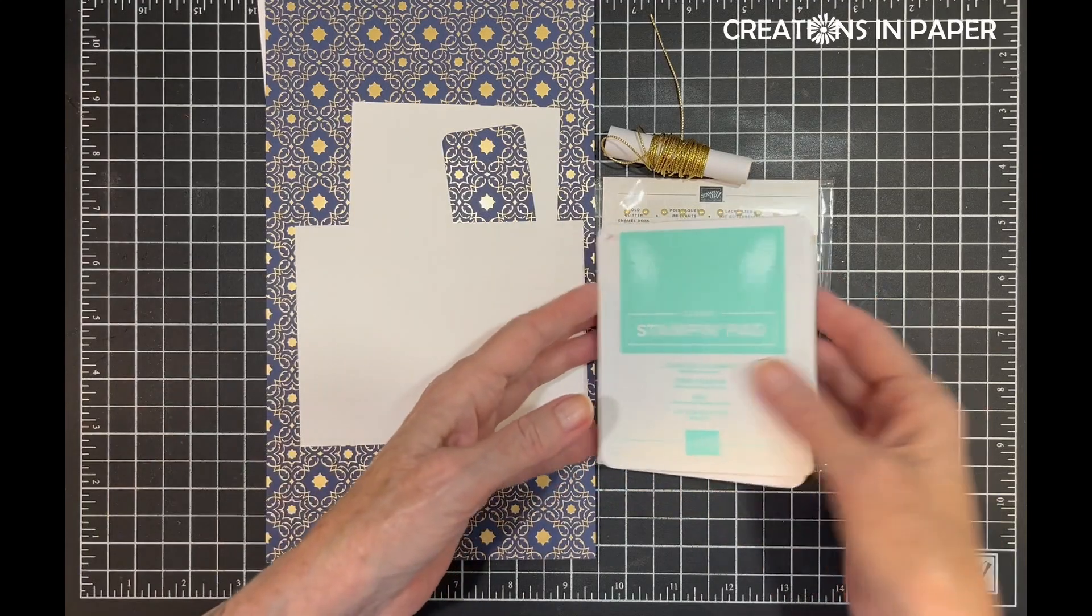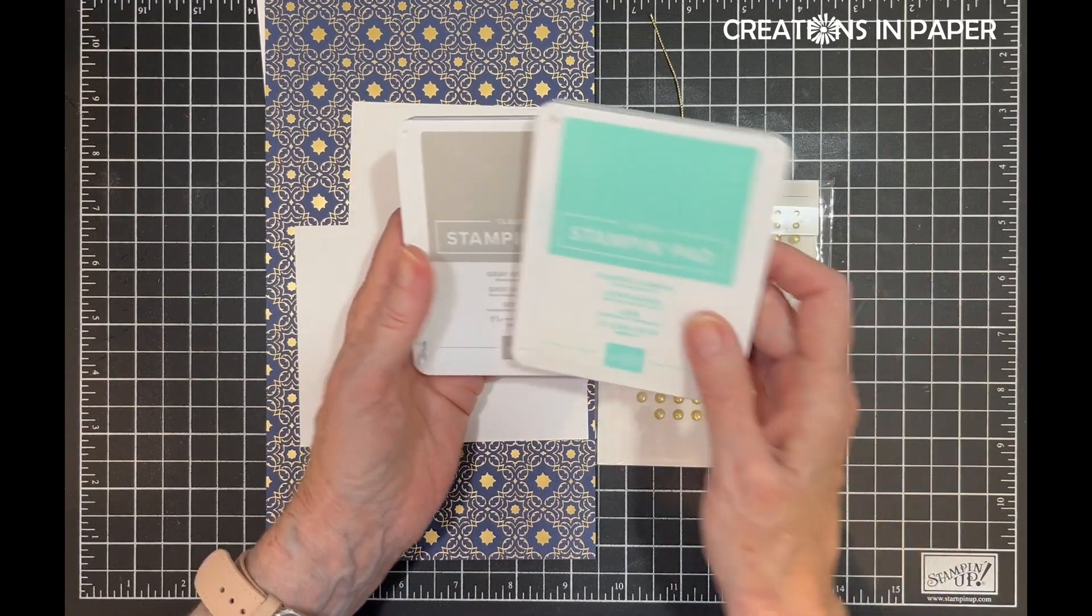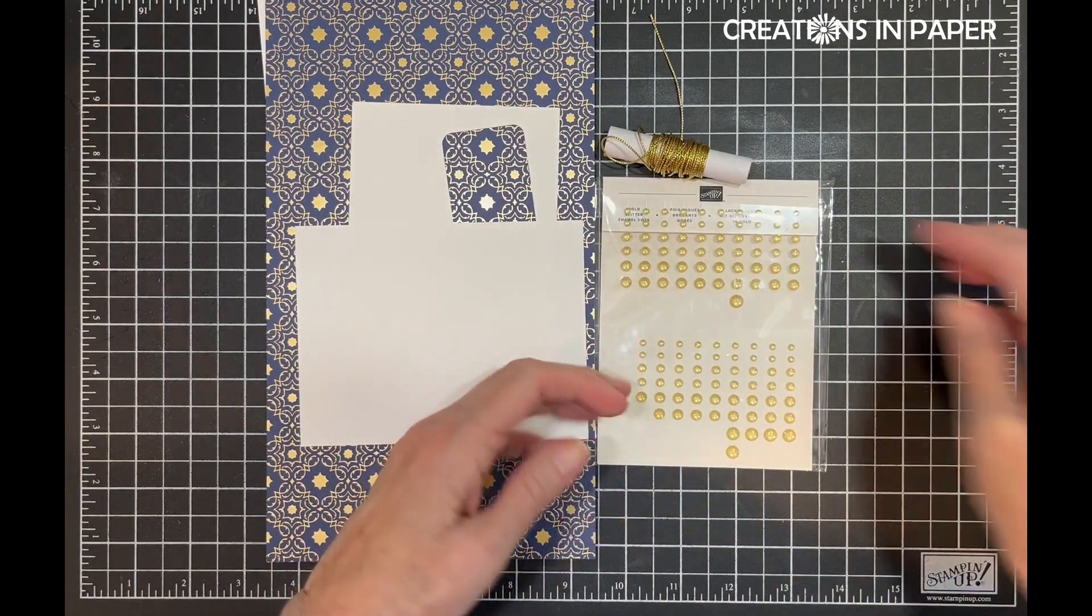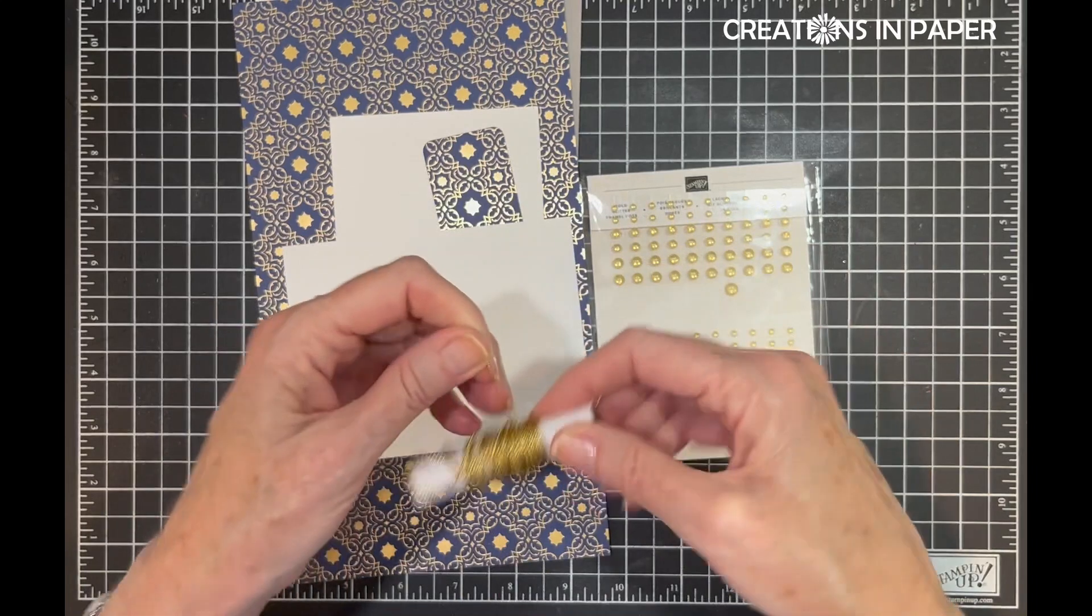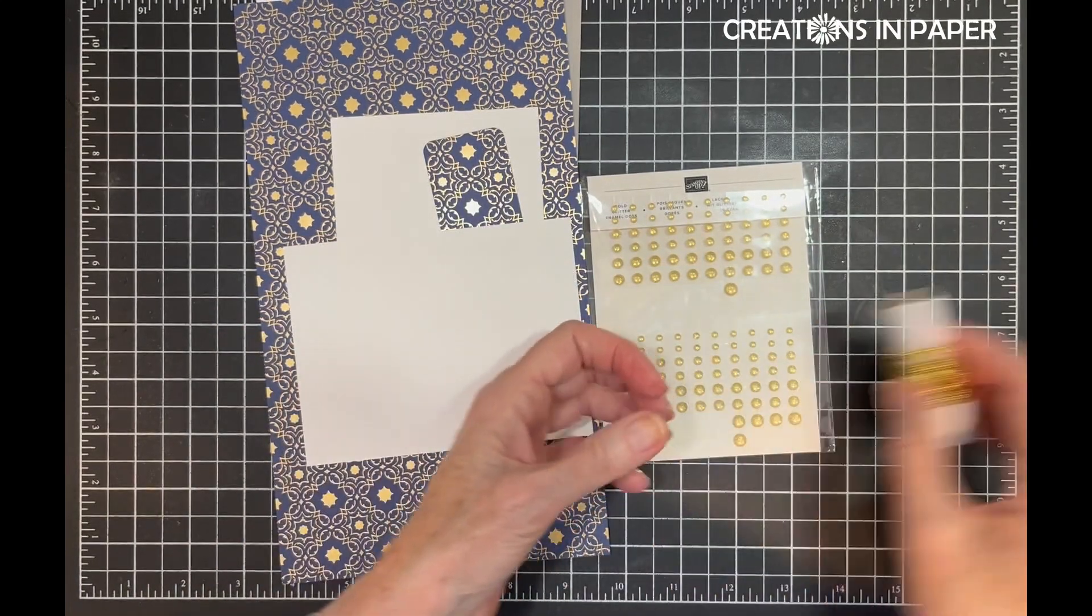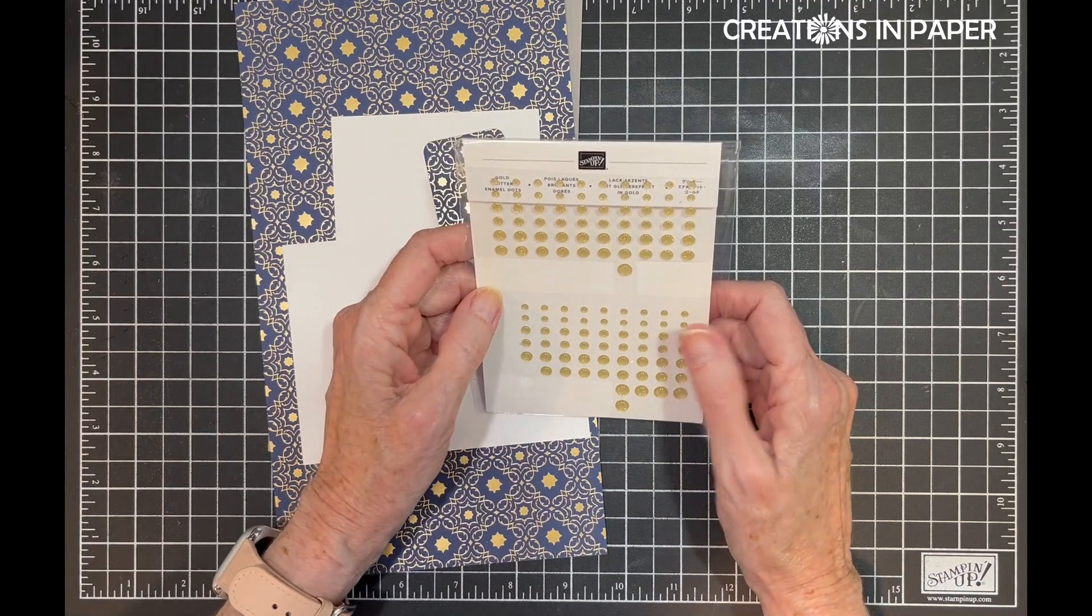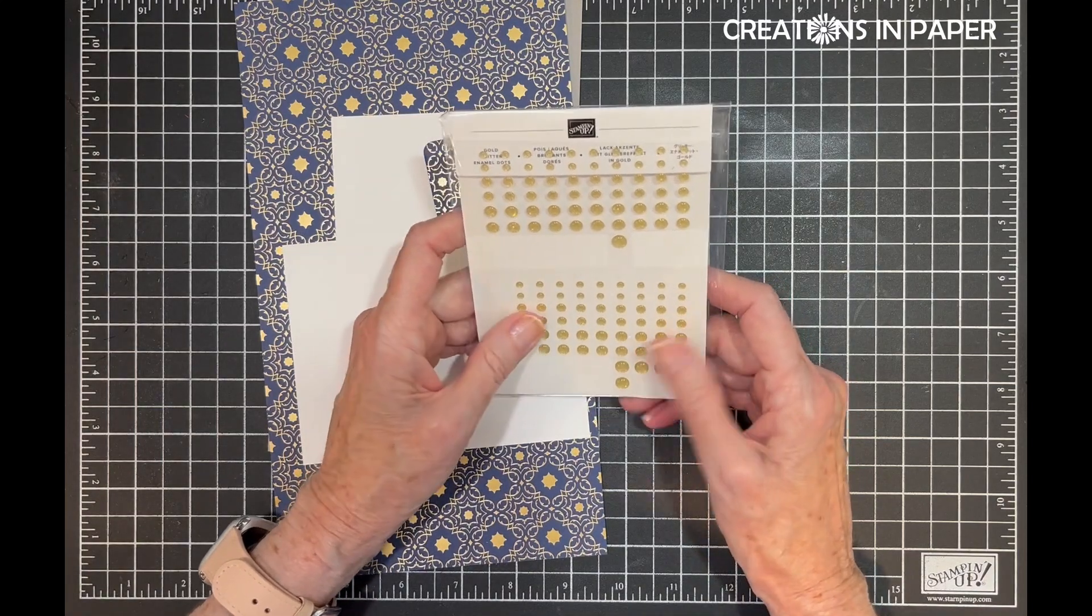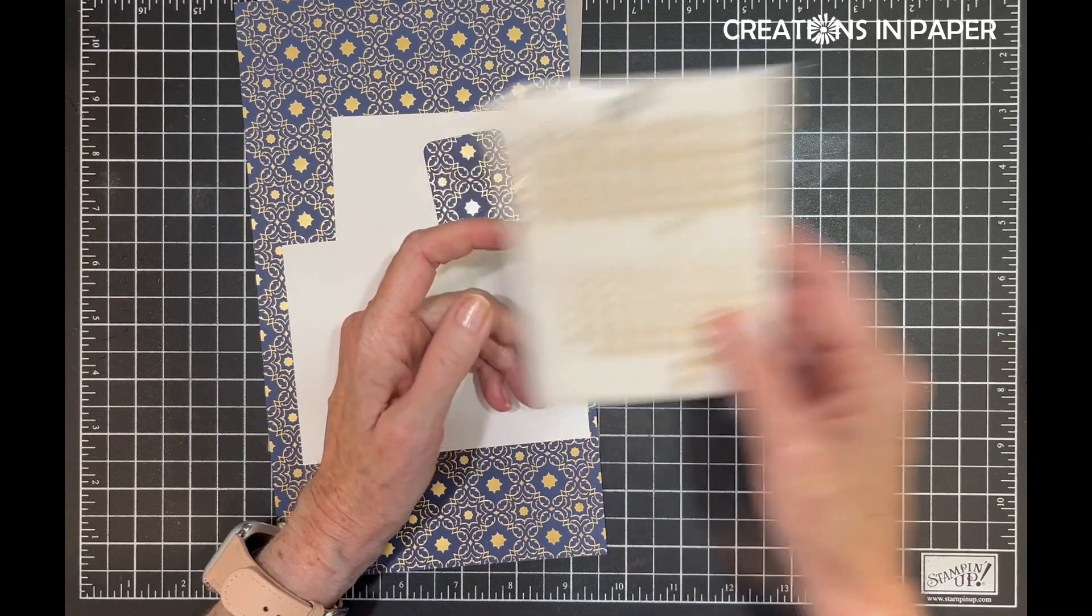I am using Coastal Cabana and Gray Granite ink this time. I have pulled in the Simply Elegant trim, the gold piece, and I've pulled in some retired gold glitter enamel dots. I don't have too many gold things and I like these, so I'm going to use those.